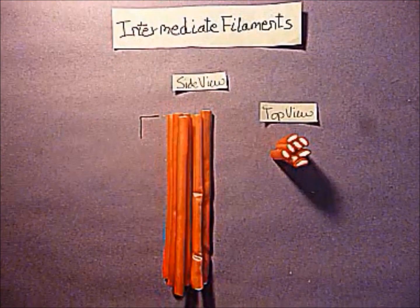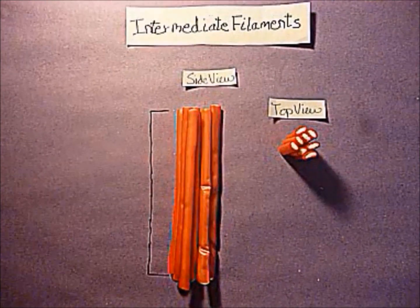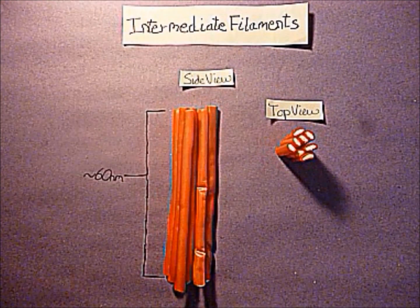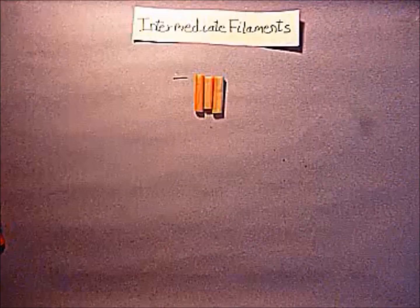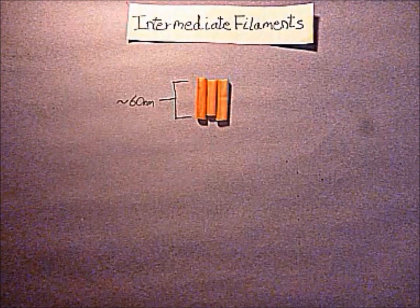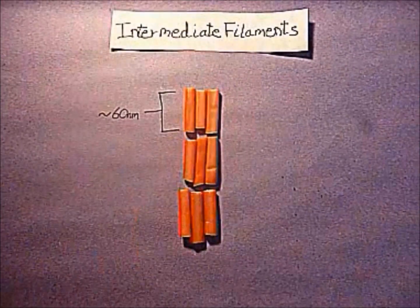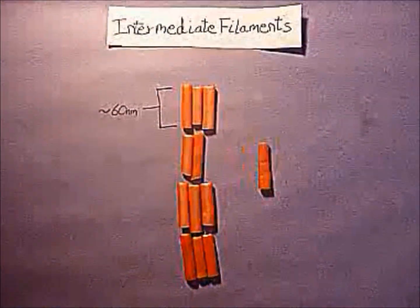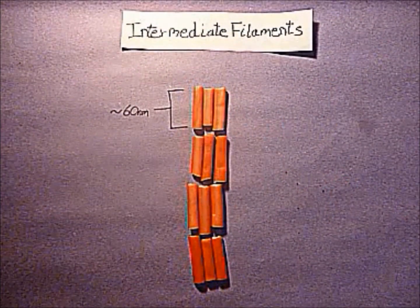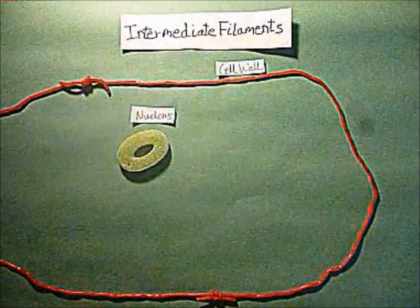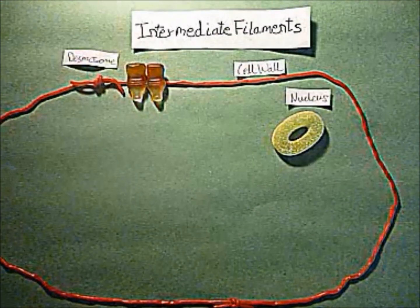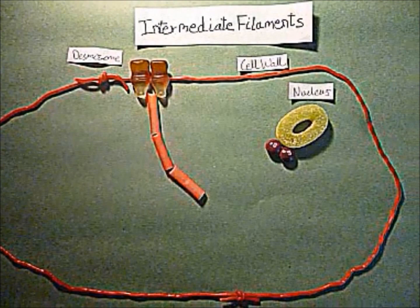Eight tetramers associate lengthways to form one unit length of filament, approximately 60 nanometers long, while these unit lengths associate end-to-end to form elongated filaments. Individual tetramer units can move into and out of the filament structure. Intermediate filaments are used for mechanical strength and have only been observed in animal cells.